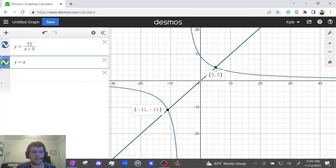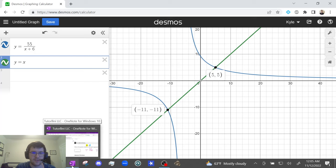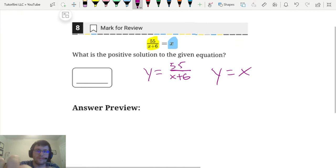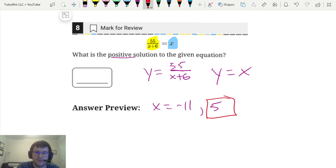Remember, we don't care about the y values, so we're just going to look at the x values. My first x value is negative 11 and my second x value is 5. So that's all we needed to do. Let's go back to OneNote. So x equals negative 11 and x equals 5. This question says, what is the positive solution? So the final answer is 5.